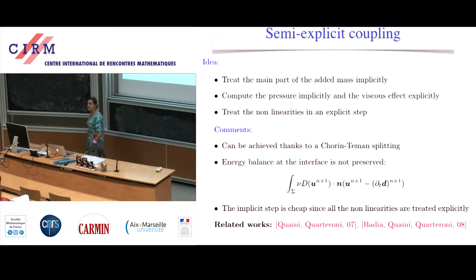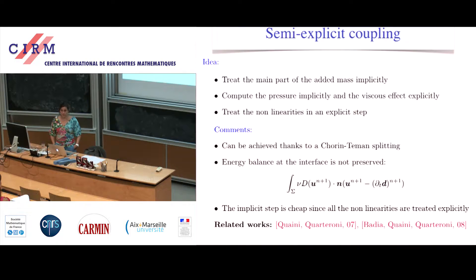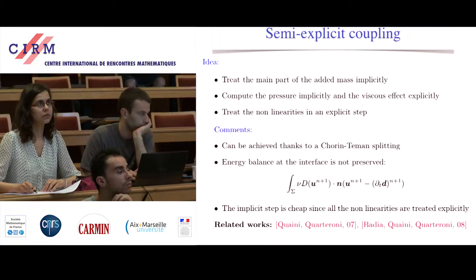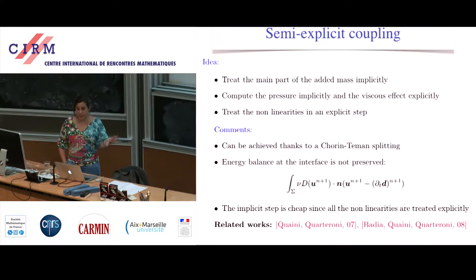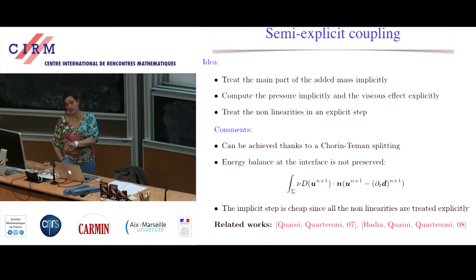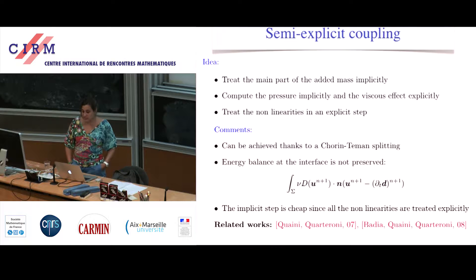As presented in the proof of existence of strong solutions by Julien Lecoeur, the idea is to split the velocity and the pressure in two parts. In the sketch of the proof, you prove regularity and existence of the solution by keeping the added mass effect implicit, while the other part is treated explicitly. The idea is to treat the main part of the added mass in an implicit way.